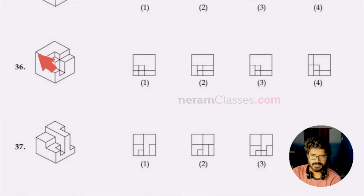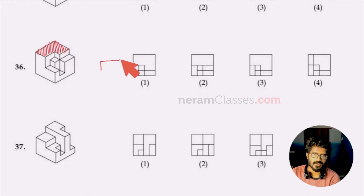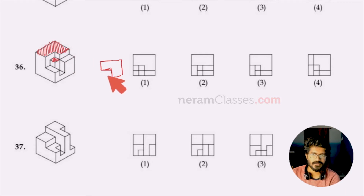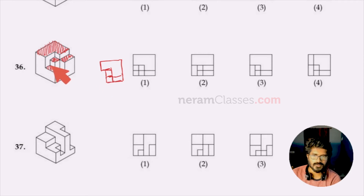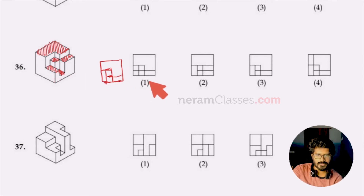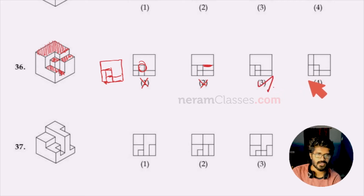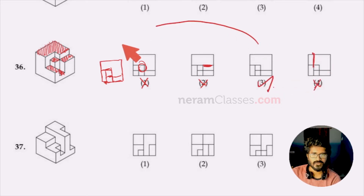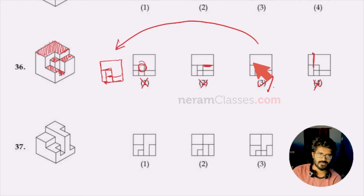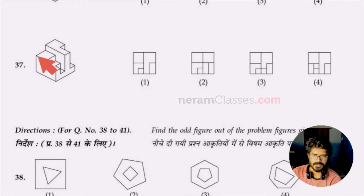For question 36, starting from the top-view shape: it comes like this, with a small square attached, plus additional shapes. Comparing with options: option one is wrong due to a square here, option two is wrong due to a line here, option four has a line so it's wrong. Option three is perfectly matching our sketch, so three is the right answer.